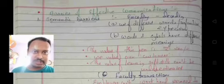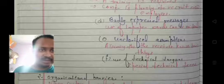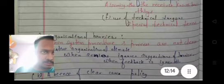Number one is semantic barrier. For example, use of different words, unfamiliar expressions, and words and symbols that have different meanings, faulty transactions, badly expressed messages, mandatory use of improper words can be misleading, unclarified assumptions, assuming the receiver knows basic things, and use of technical jargons or special technical terms.